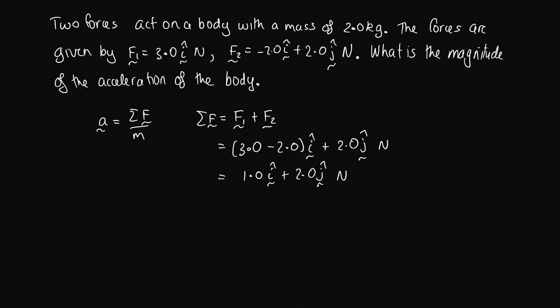The acceleration is equal to the sum of the forces divided by the mass. So we've now got 1 over 2.0, that's 1 divided by the mass, times 1.0i plus 2.0j. And now we're dividing newtons by kilograms, so that'll give us meters per second per second. So this is equal to 0.50i plus 1.0j meters per second per second.